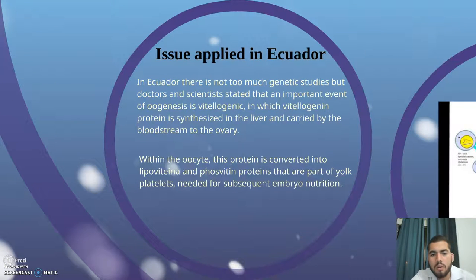An important event of oogenesis is vitellogenesis, in which vitellogenic protein is synthesized in the liver and carried by the bloodstream to the ovary. Within the oocyte, this protein is converted into lipovitellin and phosphovitin proteins that are part of the yolk platelets needed for subsequent embryo nutrition.